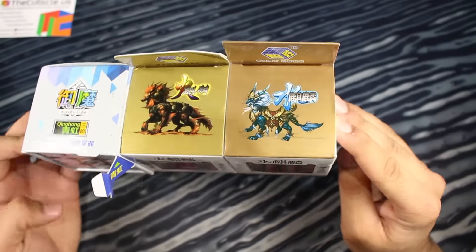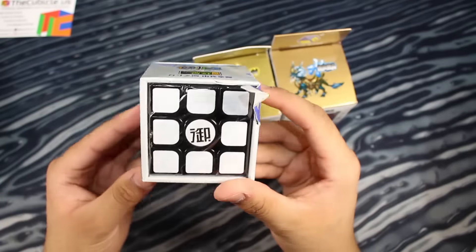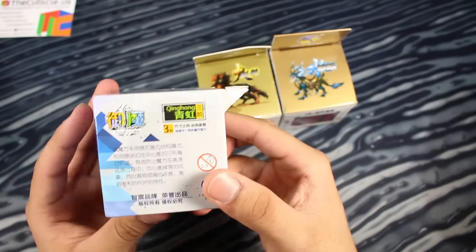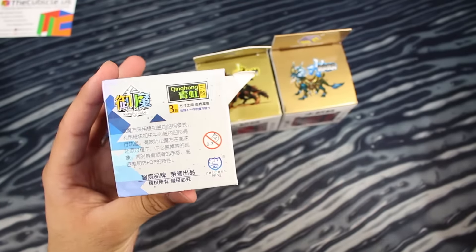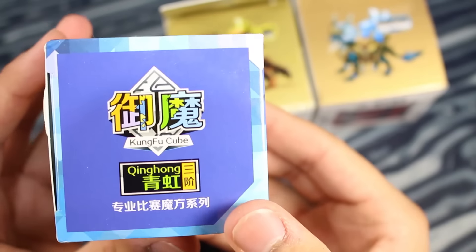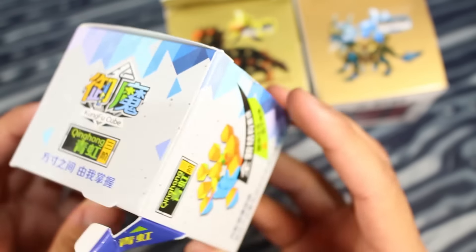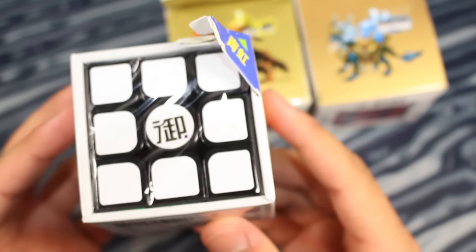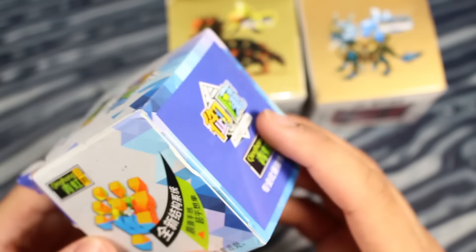All right, so here we have some cool new 3x3s. Kung Fu - I don't know how to pronounce its actual name. I think it's Qing Hong. So that's the name of it. It's a new brand that just came out called Kung Fu. They've also come out with two new 4x4s and a 2x2, so they're debuting quite a few new basic speed cubes.